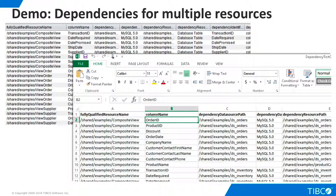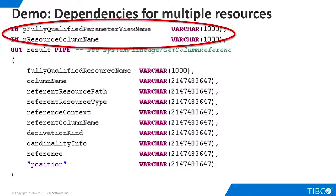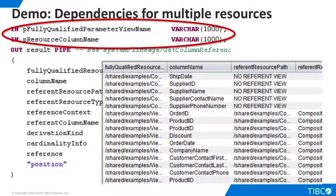We can save the results to a file and open it in Excel for sharing and further analysis. Our new references script is similar to the dependencies script. It accepts a view name and column name for any view that contains a list of resources to be analyzed. When we execute the procedure, we get reference analysis for all of the views in our parameter set. Our project managers now have all the information they need to do impact analysis at the project level. Our demo is complete.